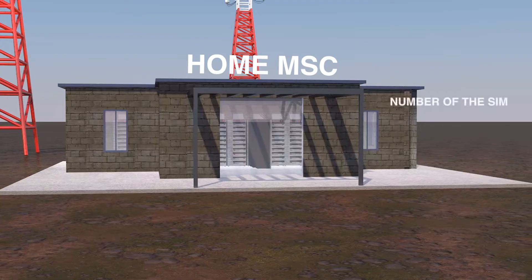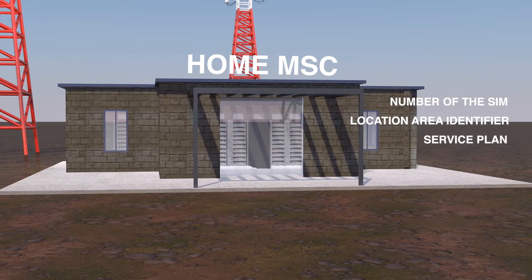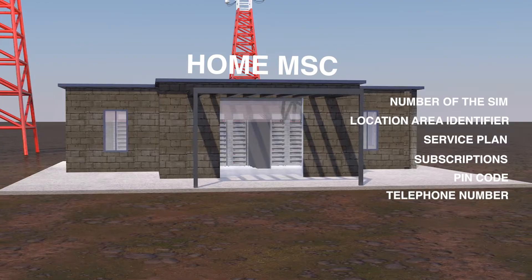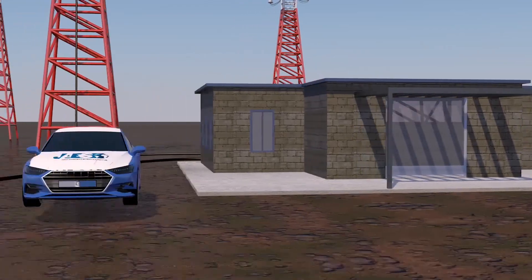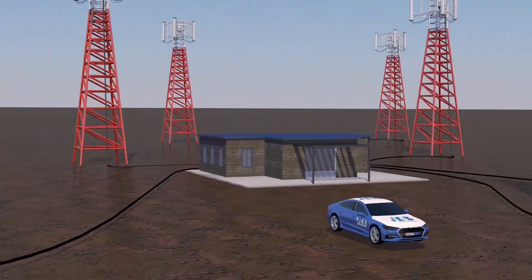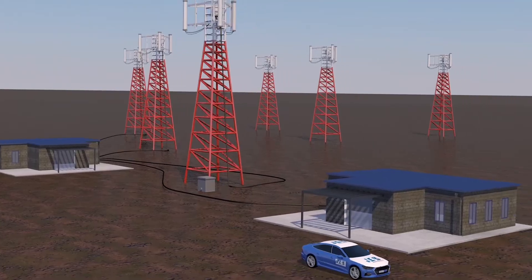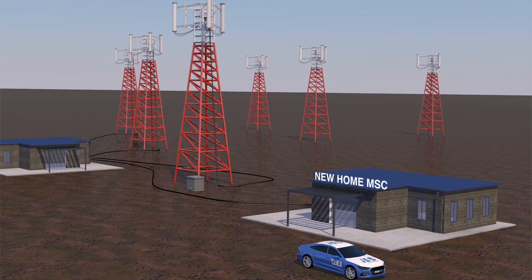This information can include the serial number of the SIM, the location area identifier (that is, the last visited geographical area), the service plan, the PIN code, and above all, the telephone number. If you travel outside the geographical area covered by your Home MSC, a new MSC will handle your calls, communicating with your Home MSC, which will always know your cell location and therefore correctly direct incoming calls to your phone.